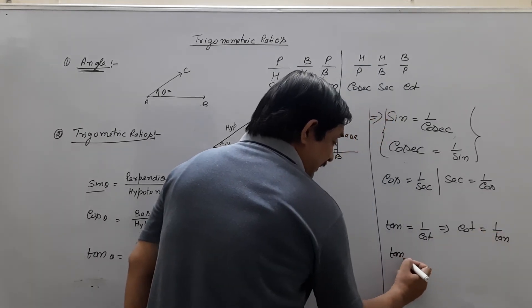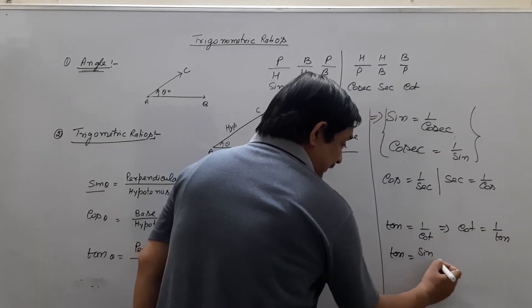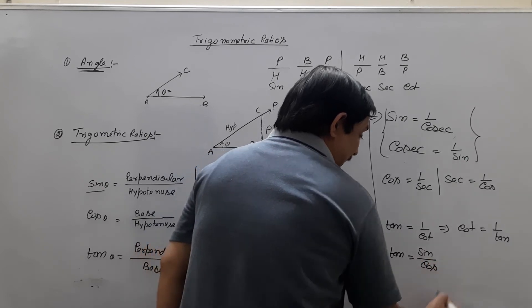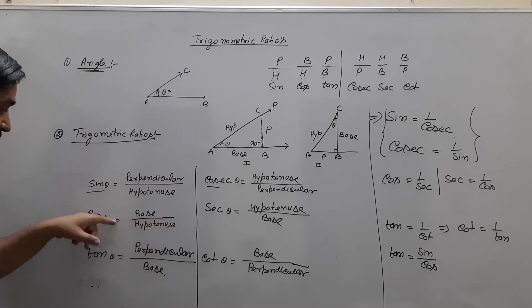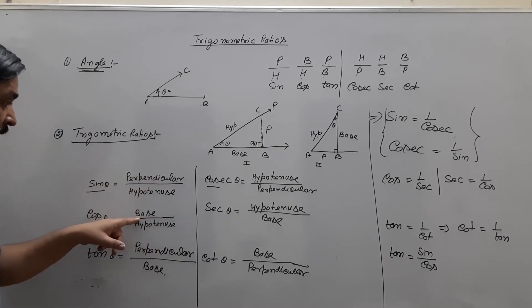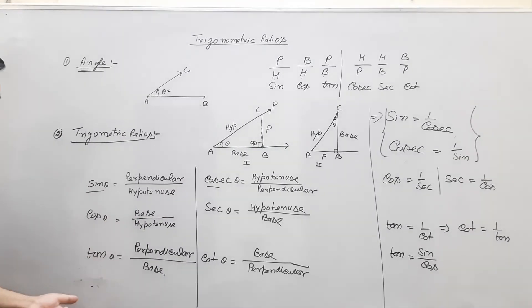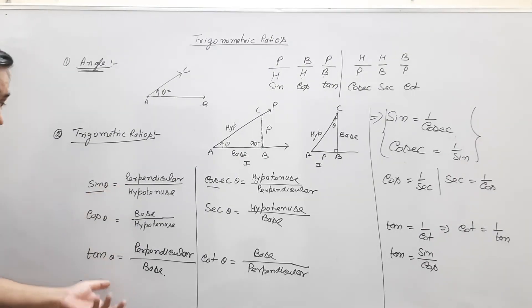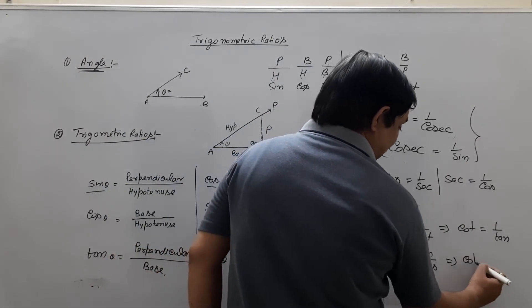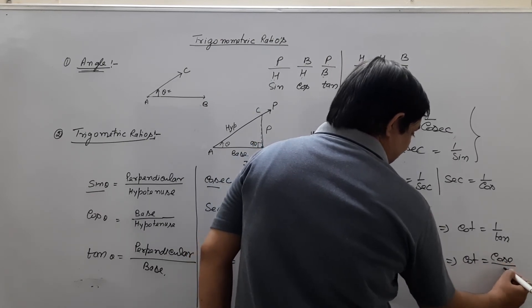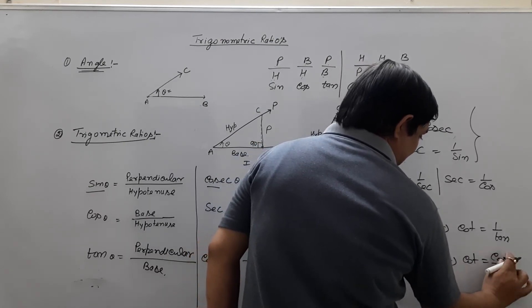Tan is also can be written sin upon cos. Sin upon cos, that is tan. Cot, it is reciprocal, cos upon sin. What is the problem?